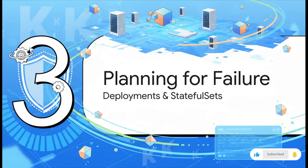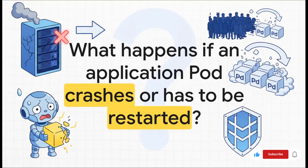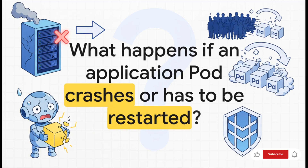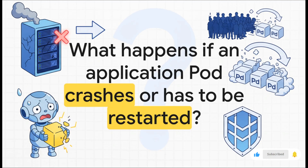Now we can connect to our application — but how do we make sure it's always running? And what happens when it gets a ton of traffic? This is where Kubernetes really shines. A server is going to crash, a bug is going to take down a pod, or maybe your app goes viral and traffic just explodes. If you're relying on just one single pod for any part of your app, you're asking for trouble.